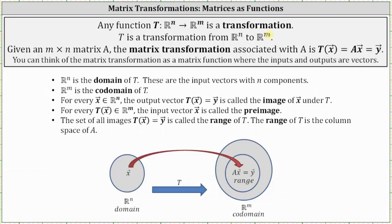Before we look at some examples, let's define some vocabulary. Rn is the domain of t — these are the input vectors with n components. Rm is the codomain of t. For every vector x in Rn, the output vector t of vector x, or vector y, is called the image of vector x under t. And for every t of vector x or vector y in Rm, the input vector x is called the preimage.